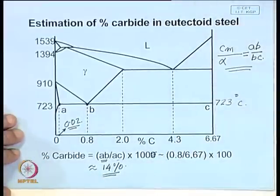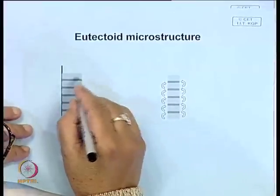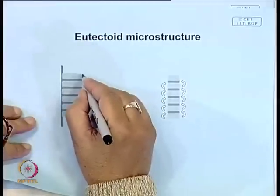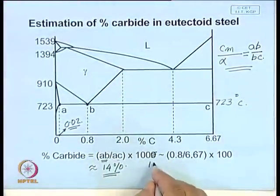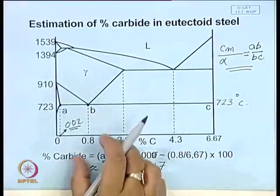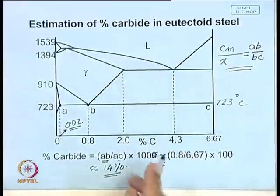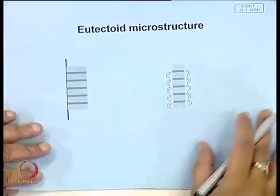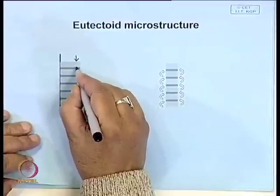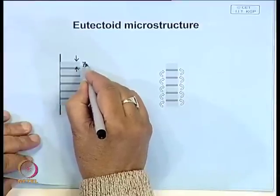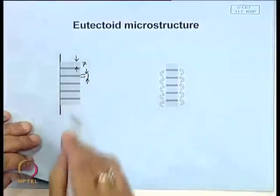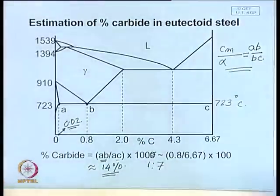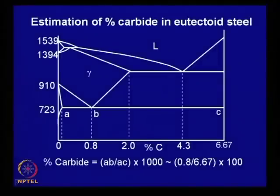So in the microstructure, the pearlitic structure has approximately 14% cementite, meaning a ratio of about 1:7 (cementite to ferrite). If we assume the densities of ferrite and carbide are nearly the same, this also represents the volume percentage. So the width of the ferrite plate is approximately 7 and the width of the cementite plate is approximately 1 — giving a 1:7 lamellar structure. Pearlite — the eutectoid structure — is therefore a lamellar structure with the two phases present in a ratio of approximately 1:7.